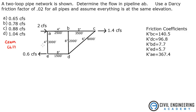The first thing that's important to know is we've got to keep continuity involved here. We've got 2 CFS coming into the system at A. At C, we've got 1.4 coming out. And at E, we've got 0.6 coming out. If you sum that up, that equals each other — 2 CFS in, and 1.4 plus 0.6 coming out.